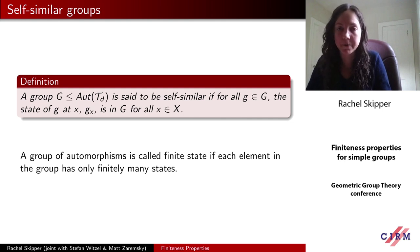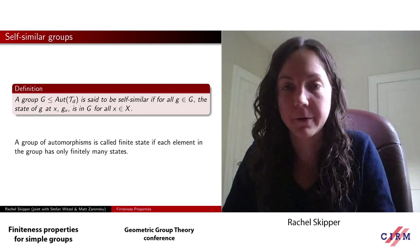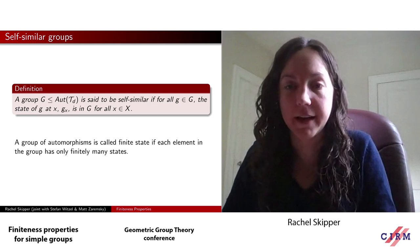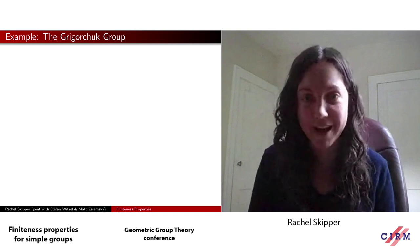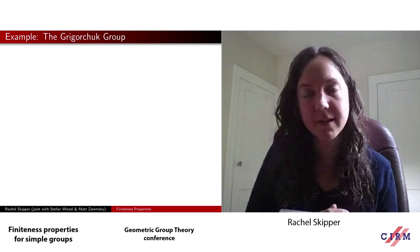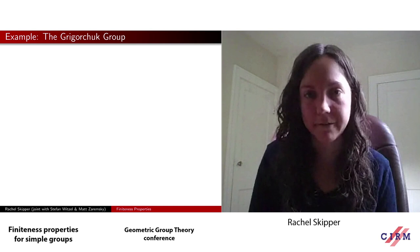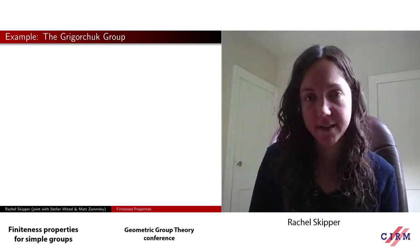We'll say a subgroup of the automorphism group of the tree is self-similar if for every element of the group, the state of G at vertex x is back in the original group G. A group of automorphisms is also called finite state if each element in the group has only finitely many distinct states when we decompose and move down the tree. The most famous example of such a group is the Grigorchuk group, introduced in the 1980s. It was the first example of an amenable but not elementary amenable group, the first example of a group of intermediate growth, and also a very nice example of an infinite torsion group — every element has order a power of two.